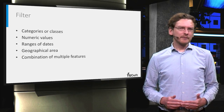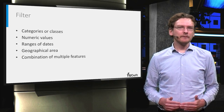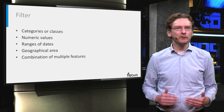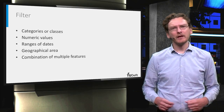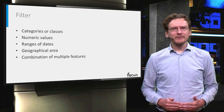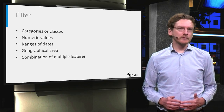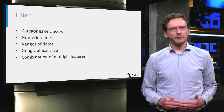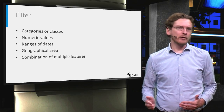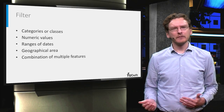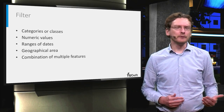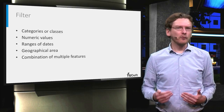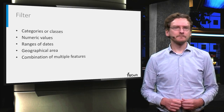The next step is filtering, and this is relevant if you need to extract some subset of the data instead of using all of it. The key question to think about is what attributes of the data need to be filtered on. For example, are you looking at categories or classes, numeric values, ranges of dates, geographical areas, or a combination of multiple features?